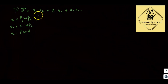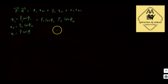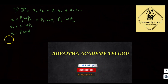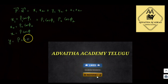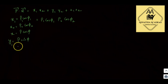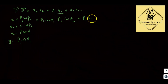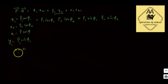So X1 = rho1·cos(phi1), X2 = rho2·cos(phi2). And z1 is equal to z1, z2 is equal to z2.